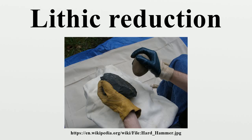Cryptocrystalline or amorphous stone such as chert, flint, obsidian, and chalcedony, as well as other fine-grained stone material such as rhyolite, felsite, and quartzite, were used as source material for producing stone tools. As these materials lack natural planes of separation, conchoidal fractures occur when they are struck with sufficient force.